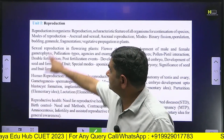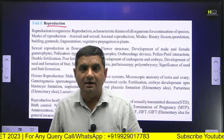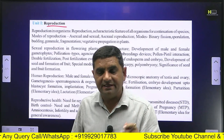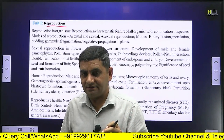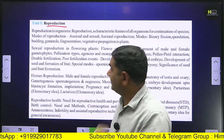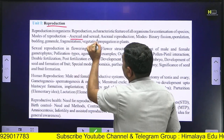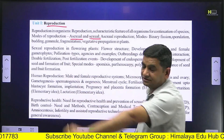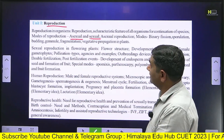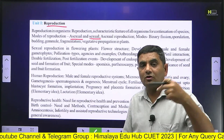The first unit covers reproduction. We will look at animal reproduction and reproduction in plants. Both asexual reproduction and sexual reproduction will be covered, and sexual reproduction is a very important topic.